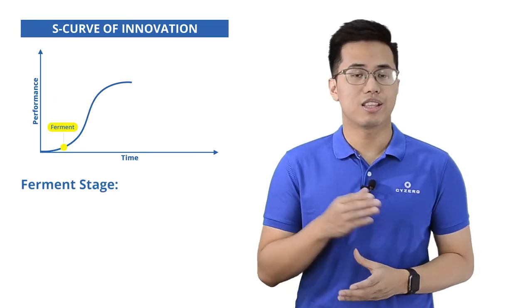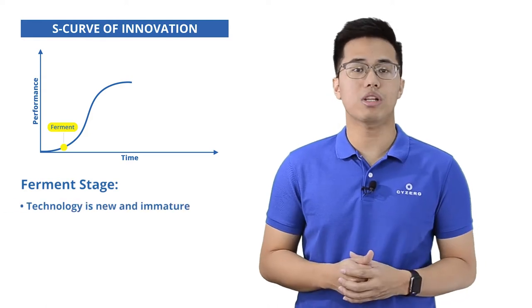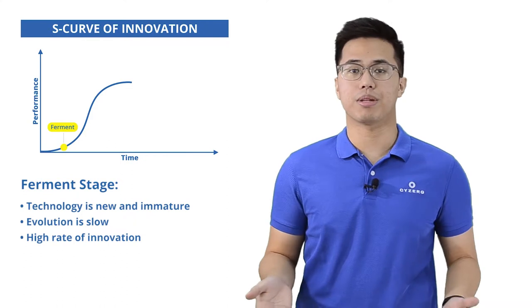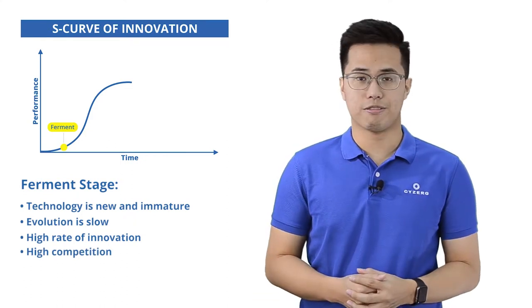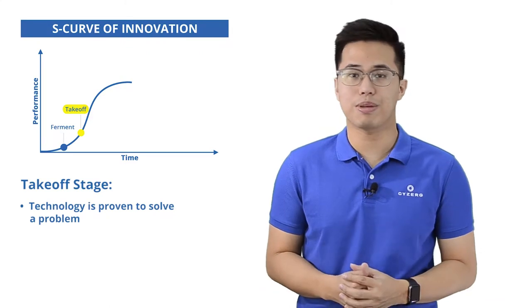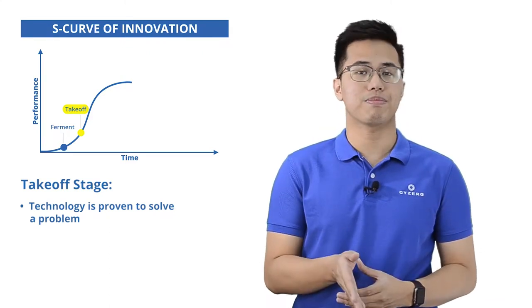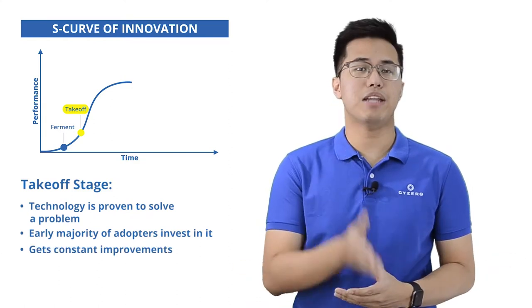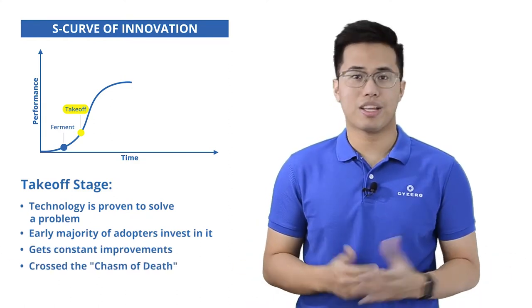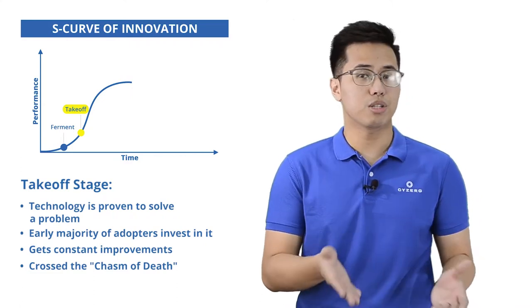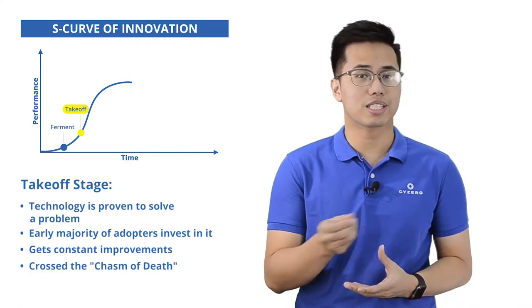Ferment is the first stage. This is the time where technology is totally new. Evolution is slow, there's a high rate of innovation and research and development. Competition is also very tough. Takeoff is the second stage. This is where technology has manifested its ability to solve a problem in the market. Early majority of adopters starts to invest in it, it constantly gets improvements, and it manages to cross the chasm of death. The chasm of death is the transition between capturing early adopters and the early majority, but more about this in the next framework.